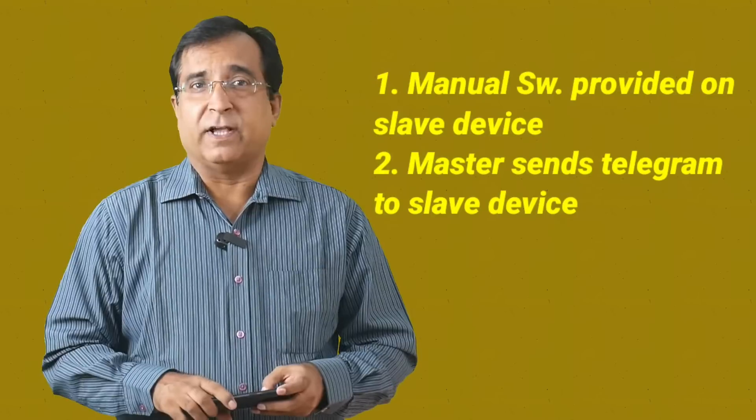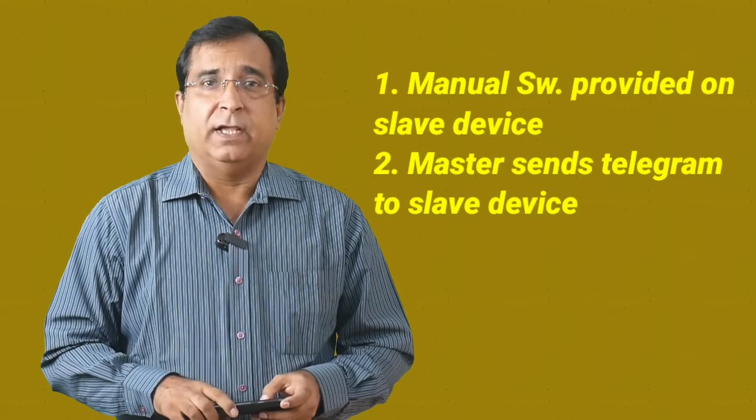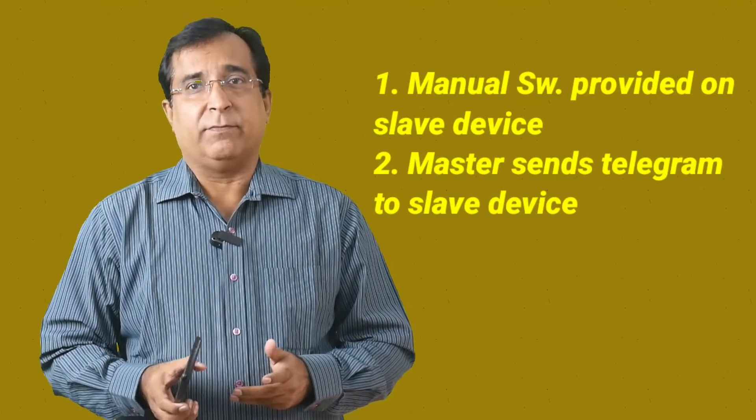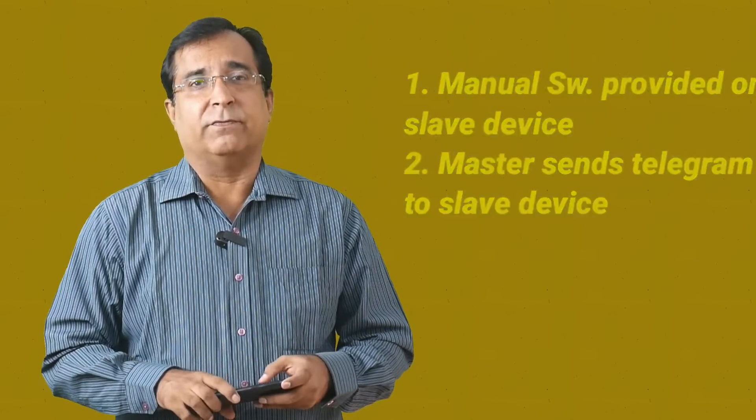Before commissioning a Profibus system, station is assigned with a unique address. The Profibus address of a DP slave can be adjusted by two ways: either through a switch provided on the device, and that is a manual process, or by sending a special telegram by the master to the Profibus slave device. Here address 126 is reserved for the default address for the DP slave. The second function is not necessarily supported by every DP slave.